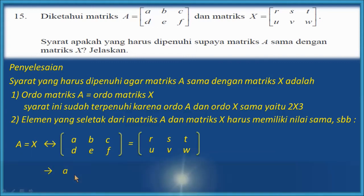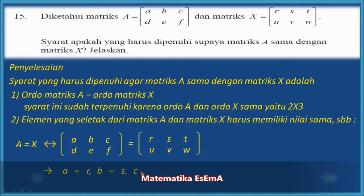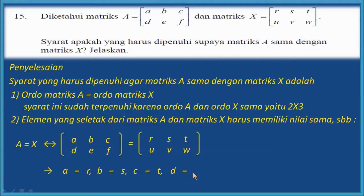Jadi, A harus sama dengan R, B harus sama dengan S, C harus sama dengan T, D harus sama dengan U, E harus sama dengan V, dan terakhir F harus sama dengan W. Jadi, itulah syarat yang harus dipenuhi agar matriks A sama dengan matriks X.